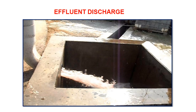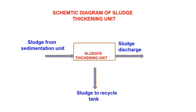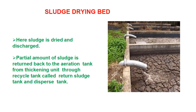After final treatment, the effluent reaches the discharge tank and goes outside the system. In the sludge thickening unit, the sludge from sedimentation — which has 60% water — is thickened to 40% water and much solid sludge, which undergoes drying for further discharge and use. The sludge is thickened and discharged out, and a partial amount of sludge is returned to the aeration tank through the recycled/return sludge tank or dispersed tank.